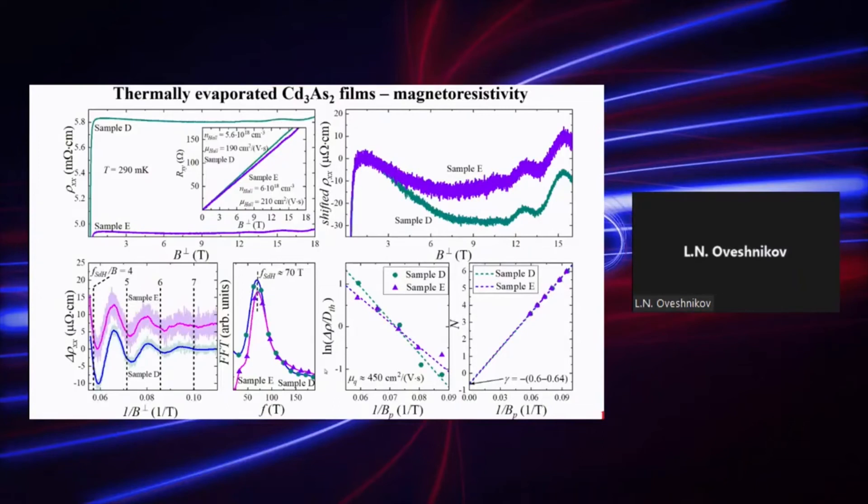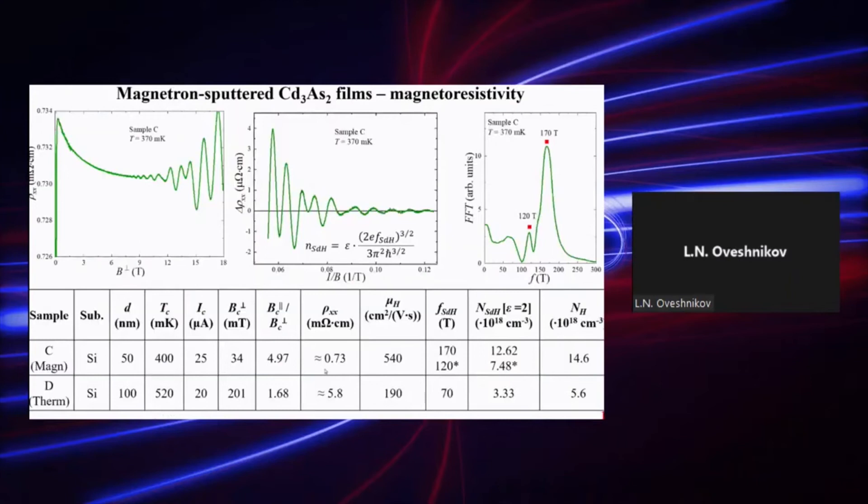However, there are many reports of these features basically conserve even at higher electron densities. We applied the same approach to the magnetron sputtered films and here we observed a more complicated form of oscillation, basically suggesting that there are several frequencies. And in addition, these frequencies are much higher than those in thermally evaporated films.